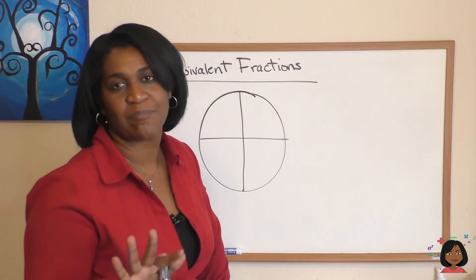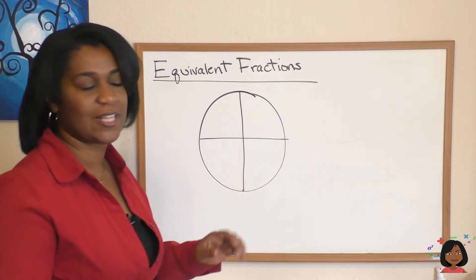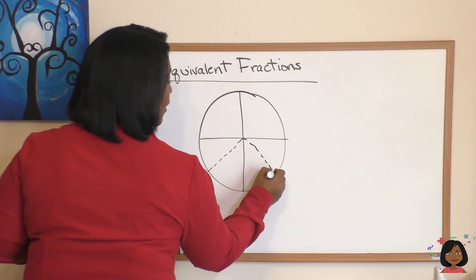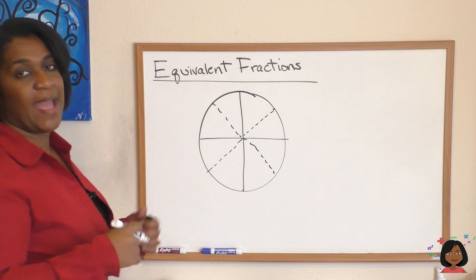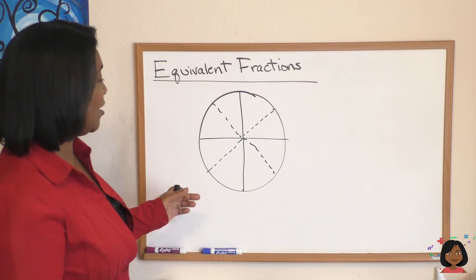It's okay, I'm all about sharing. So we take our four pizza, our four slices, and we divide them again. And now we have, instead of four pieces of pizza, we have eight.